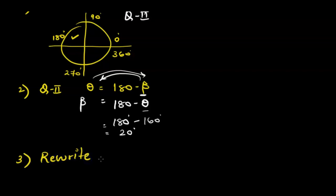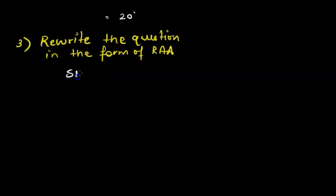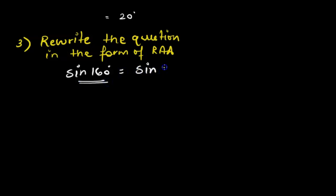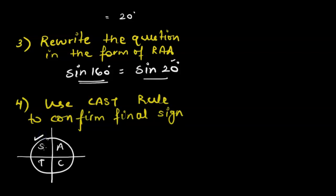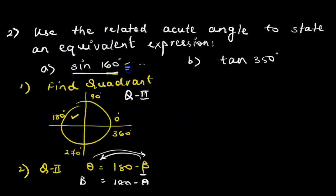Third step is to rewrite the question in the form of the related acute angle. Our question is sine 160, so we rewrite it in terms of sine 20. The trig ratios for the related acute angle and any angle with a relationship to it in the other quadrants are equal — the only difference is whether the sign is positive or negative. Step four: use the CAST rule. The angle 160 degrees is in the second quadrant, which is the house of sine, so sine is positive. Therefore, sine 160° = positive sine 20°.